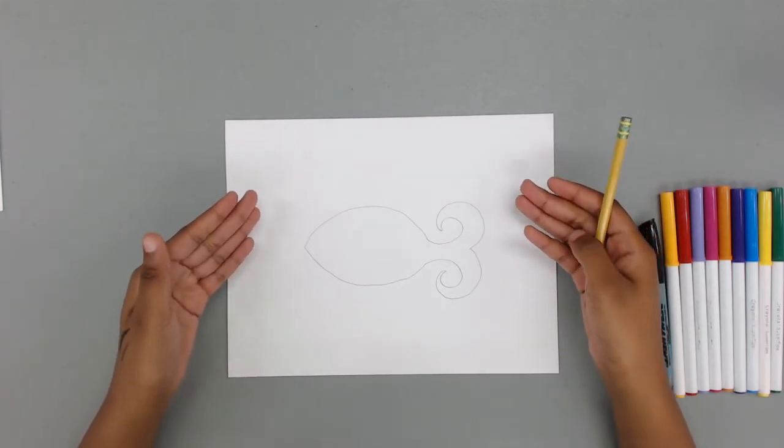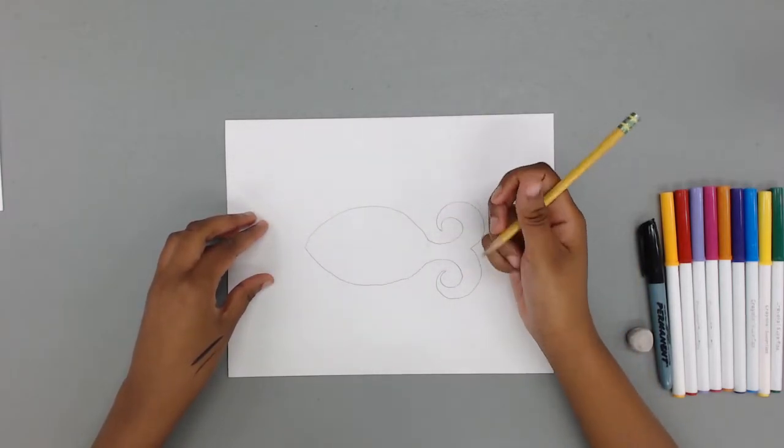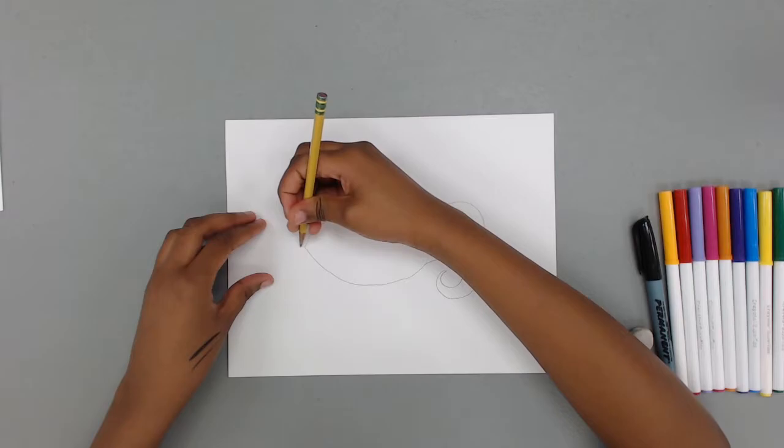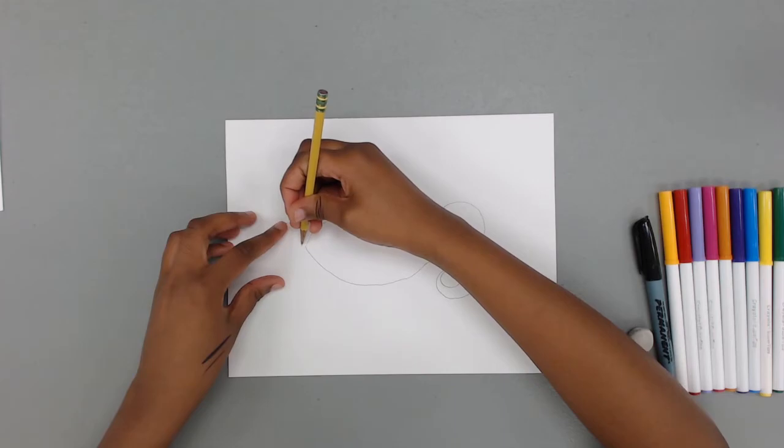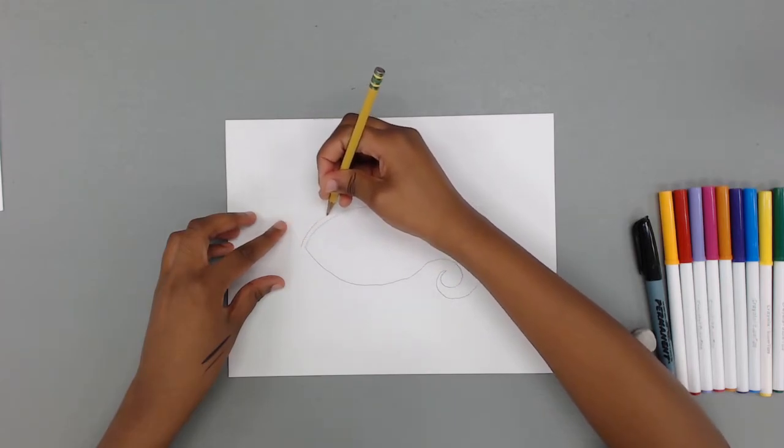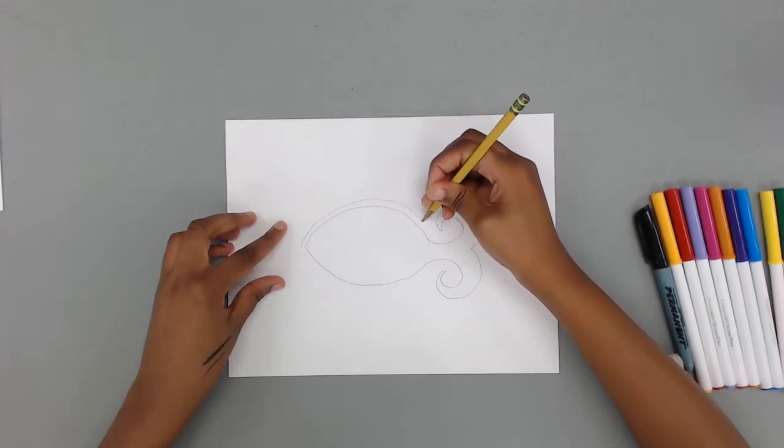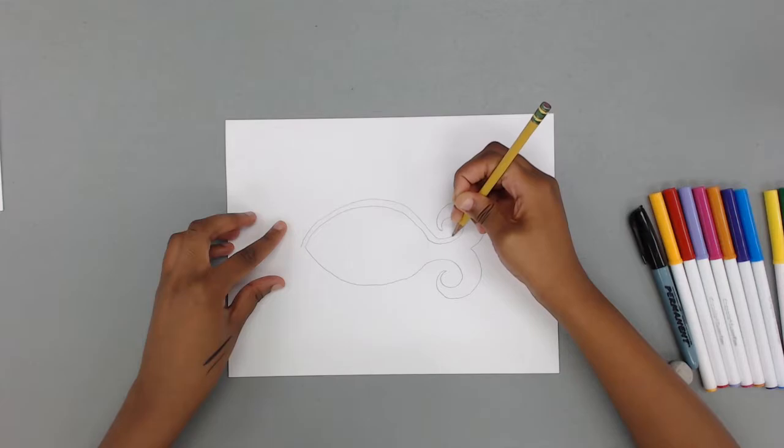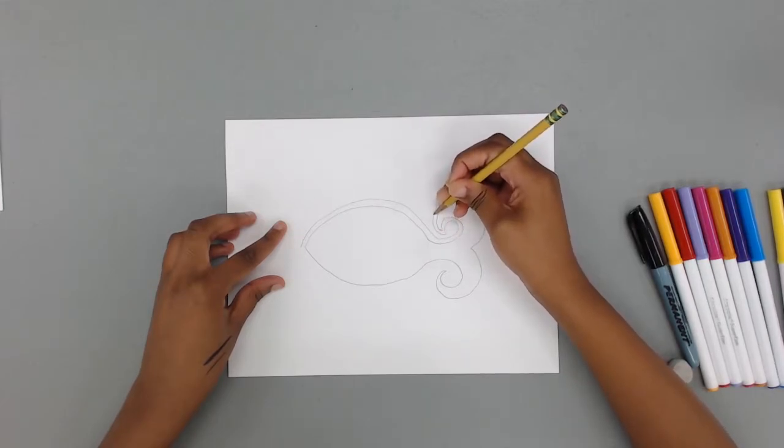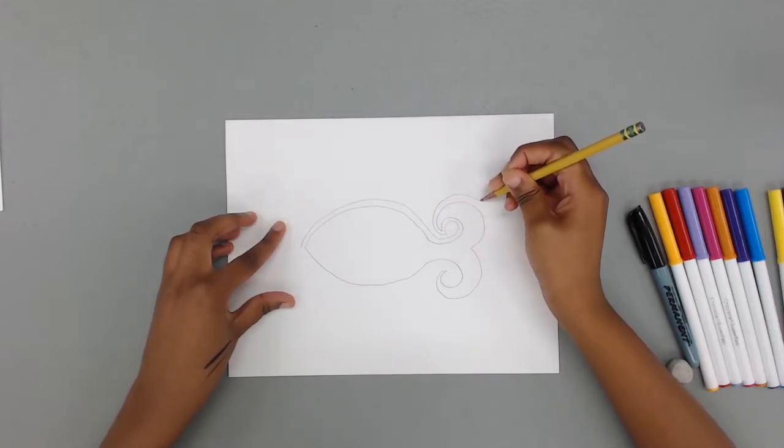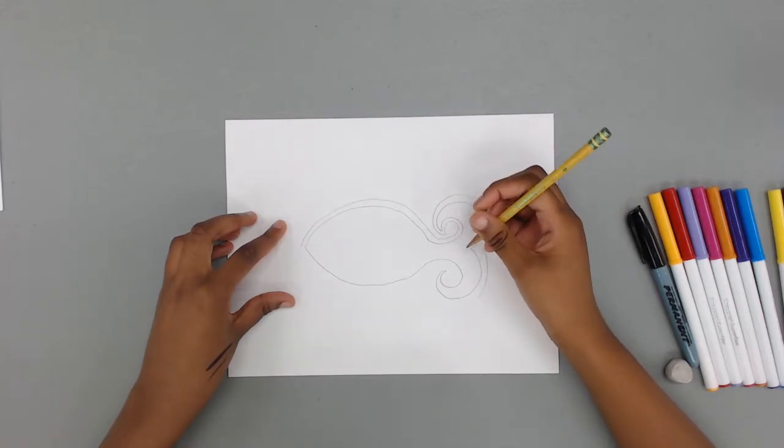Madhubani art is often characterized by a white border around all objects. We're going to start at the tip of our fish and leave a little bit of space. Then we're going to outline the entire object with a nice border. Not too thin and not too thick. Be careful around the tail of your fish because that's a tight area.